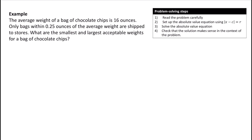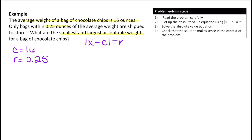On average, the weight of a bag of chocolate chips is 16 ounces. Only bags within 0.25 ounces of the average weight are shipped to stores. What are the smallest and largest acceptable weights? Once again, we have an average value and a range, so we use |X - C| = R. In this case, C equals 16 ounces and the range R is 0.25 ounces, giving us the absolute value of X minus 16 equals 0.25.